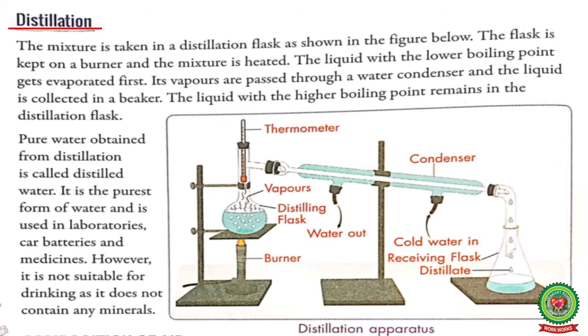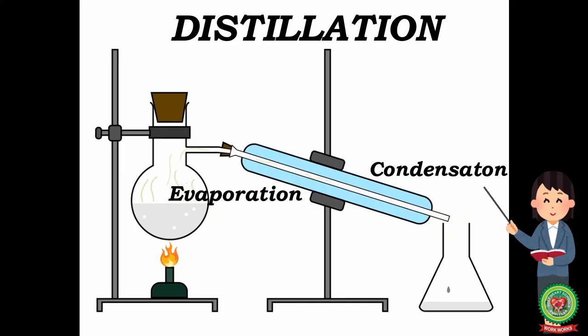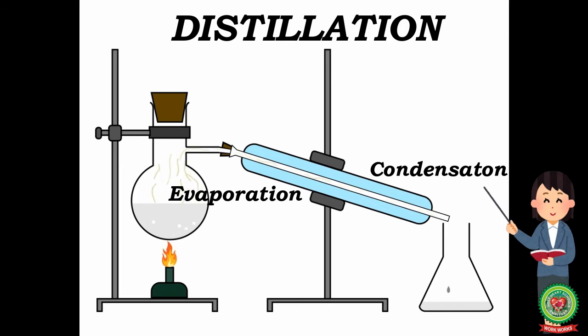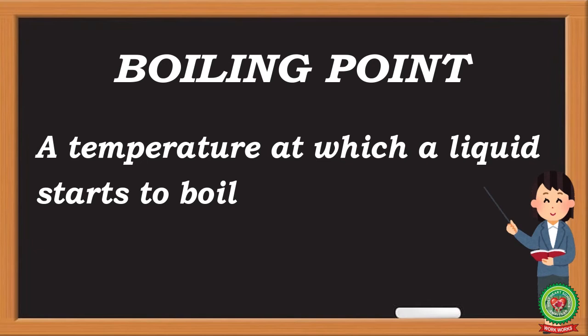In distillation, soluble substances are separated from the solution by two processes: evaporation followed by condensation. In this method, the mixture is taken in a distillation flask. The flask is kept on a burner and the mixture is heated. The liquid with the lower boiling point gets evaporated first, and this process is called evaporation. The boiling point is the temperature at which a liquid starts to boil.